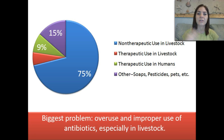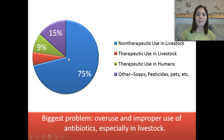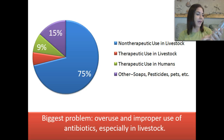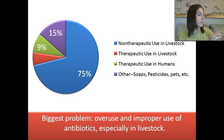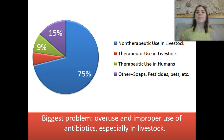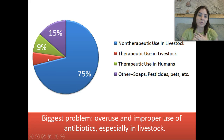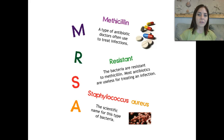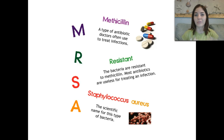So 75% of antibiotics are used when animals aren't sick — just a preemptive measure because they're kept in such dirty conditions and we know they'll probably get an infection. 15% are used in soaps, pesticides, and pets. Here's my Dial soap — it says antibacterial on the front. The active ingredient is triclosan at 0.15%, and it's an antibacterial. We have antibiotics in everything. And then 9% is used for therapeutic use in us as humans — when we go to the doctor and get antibiotics. This overuse has led to MRSA, methicillin-resistant Staphylococcus aureus, a really horrible infection that doesn't respond to antibiotics at all.